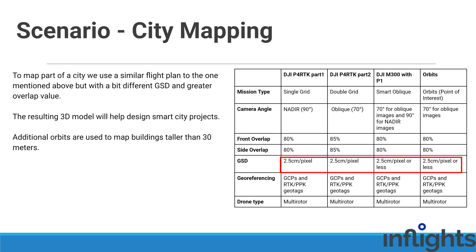The GSD is around 2.5 centimeters per pixel with DJI Phantom 4 RTK; for Matrice M300 with P1 camera it is less due to flight regulations. For city mapping projects, we use RTK or PPK equipped drones with additional GCPs to geo-reference the project.